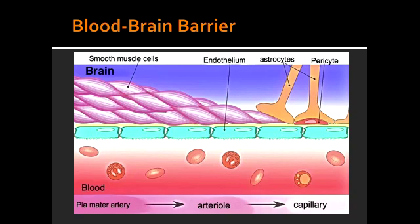How does glucose and amino acid cross the blood-brain barrier? Glucose and amino acids cross slowly by a carrier-mediated transport mechanism.